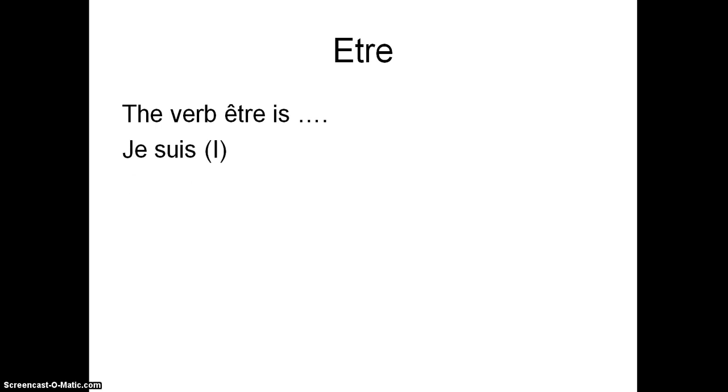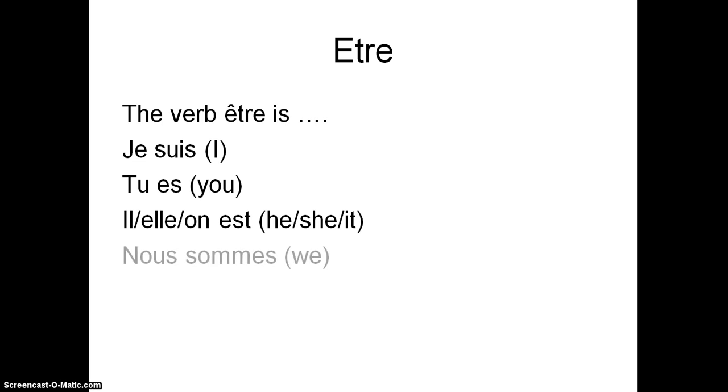So je suis is the I form. Tu es, the you singular form. Il est, elle est, he, she, it is. In this case, we might use it as has. Nous sommes, the we form. Vous êtes, the you plural form. And then ils and elles sont, the they form. So we use all of those bits, and then we add a past participle as we did with avoir.